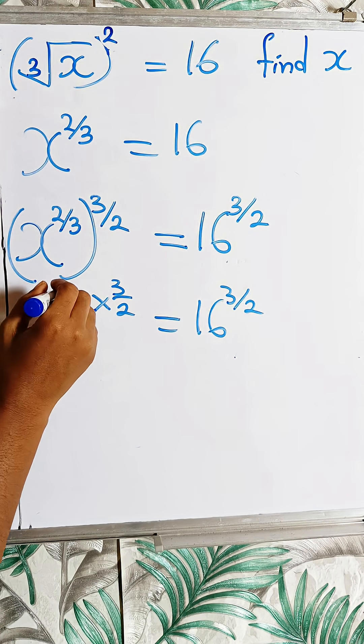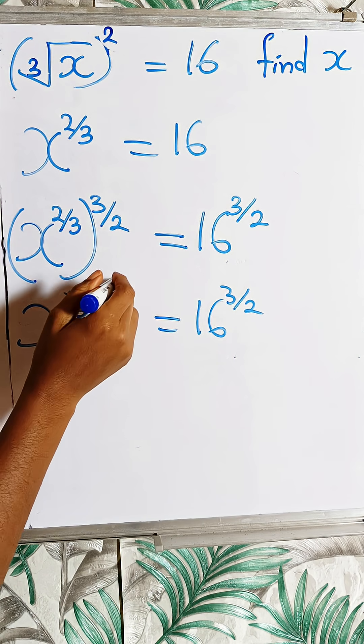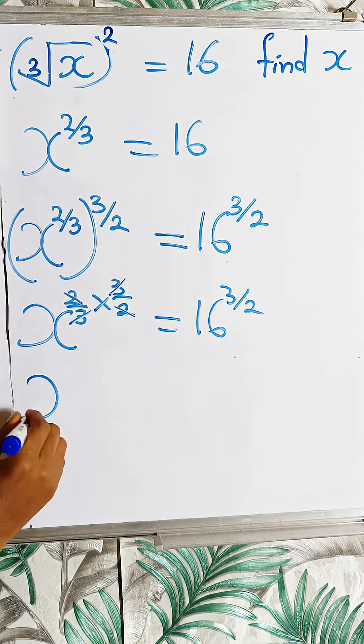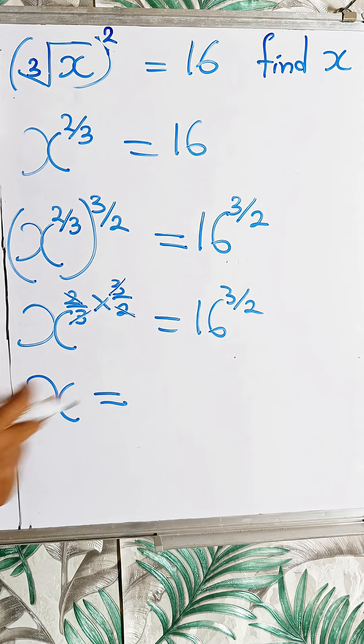So here, 2 and 2 will cancel out, 3 and 3 will cancel out. And now I have just x equal to...